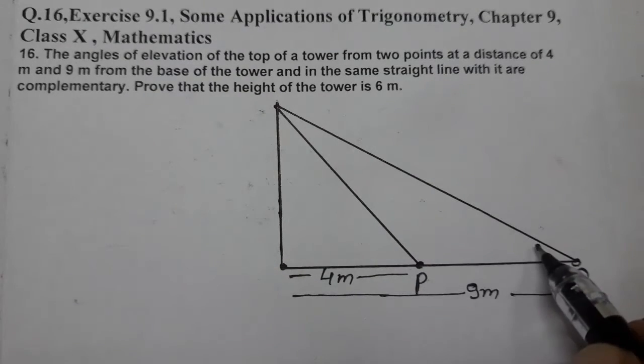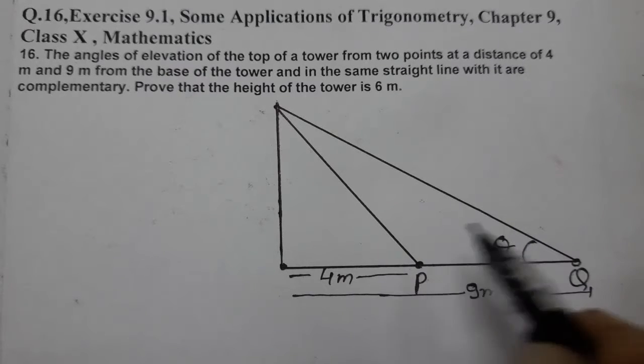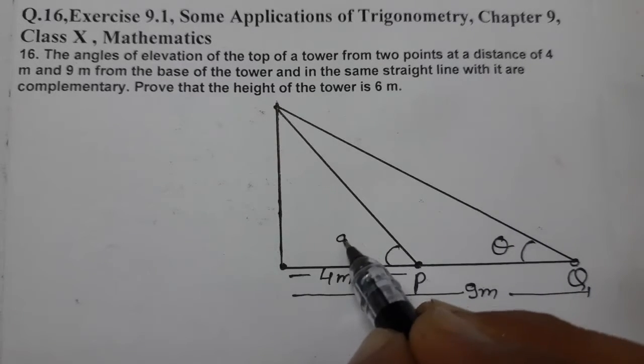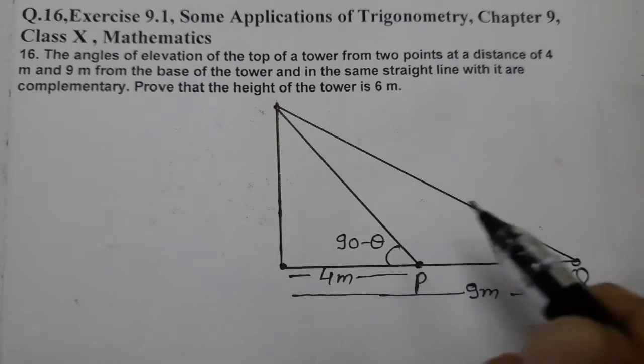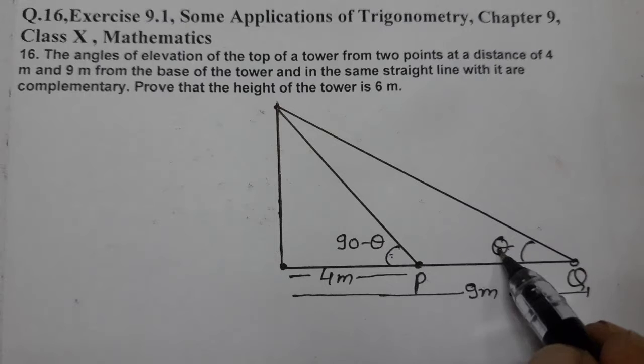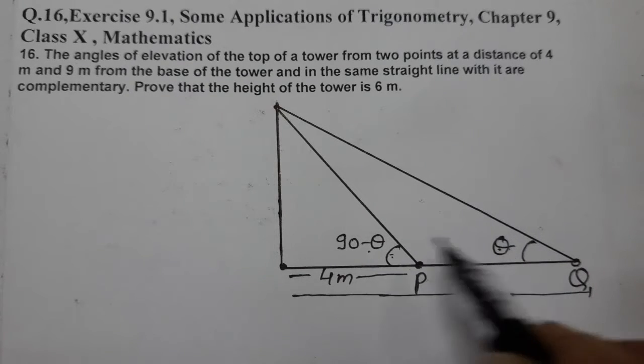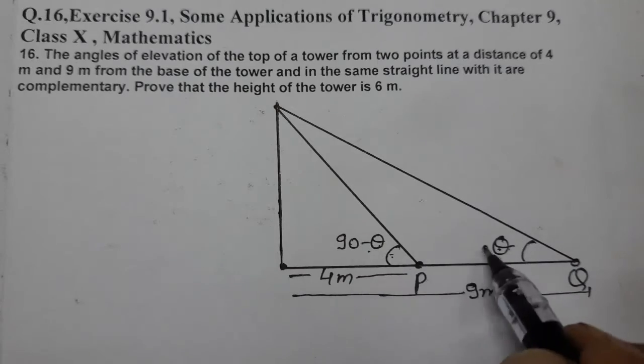Complementary means if one angle is theta, then the other angle is 90 minus theta. If it is x then it is 90 minus x. If it is theta angle then it is 90 minus theta because they are complementary.